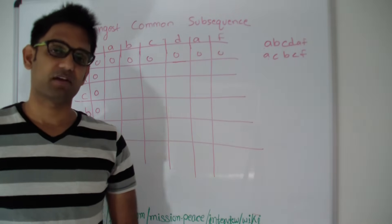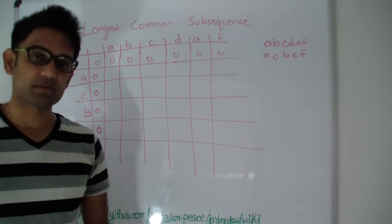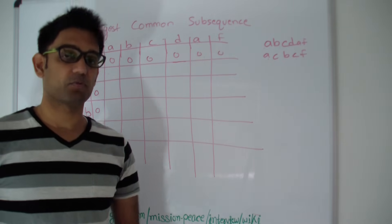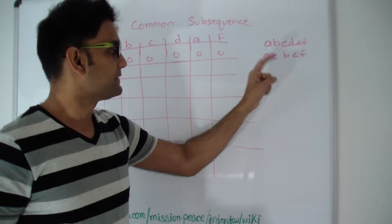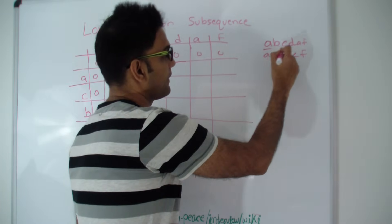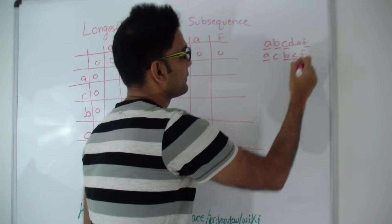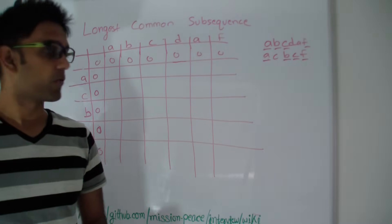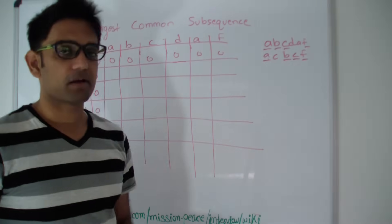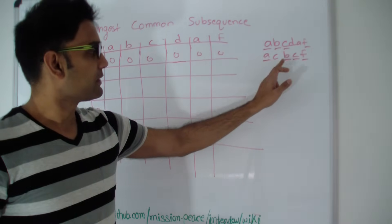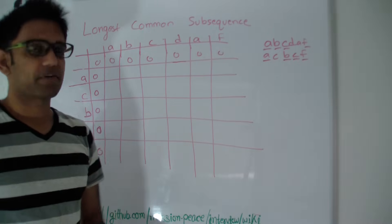Hello friends, my name is Tashar and today we're going to look at the question longest common subsequence. Given two strings, how do we find the longest common subsequence between them? For the two strings a,b,c,d,a,f and a,c,b,c,f, the longest common subsequence will be a,b,c, and f with a length of four. The thing with subsequence is that it need not be continuous in the string — we can ignore characters in between.